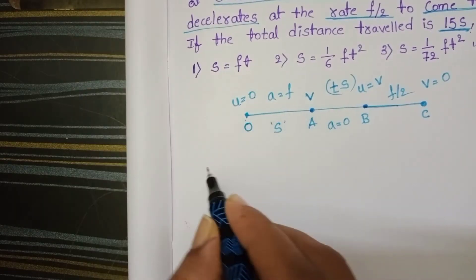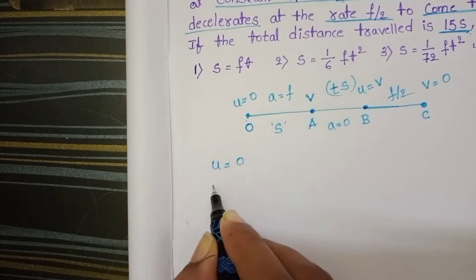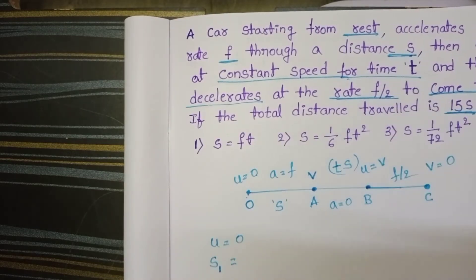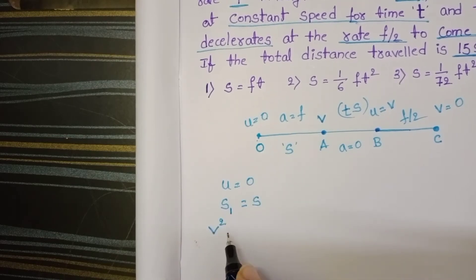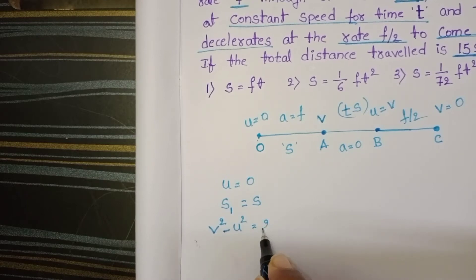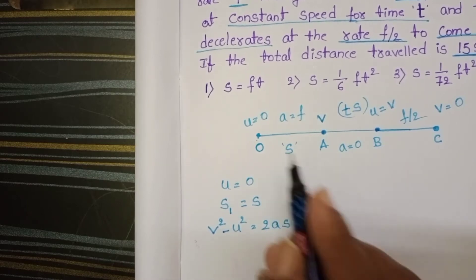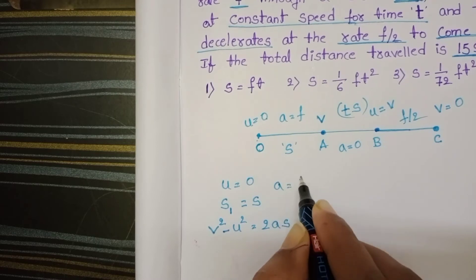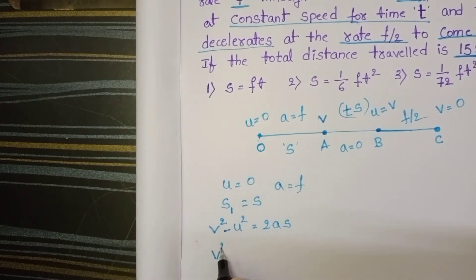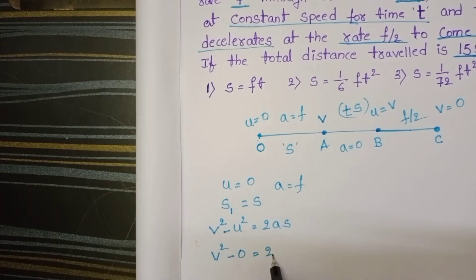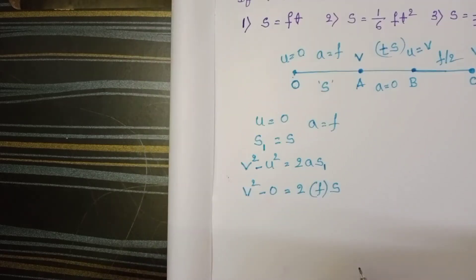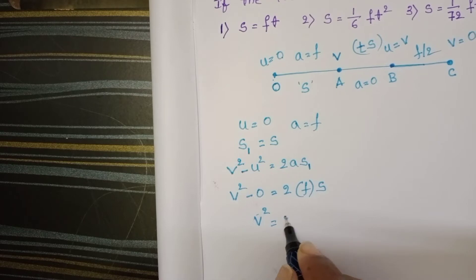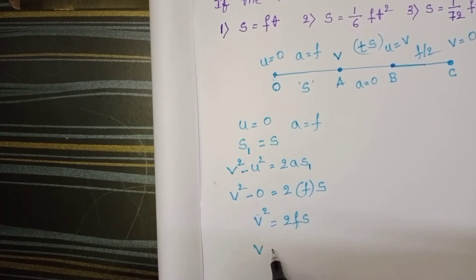From 0 to a, initial speed 0, distance s. So here s1 equals s. We know equation v² - u² = 2as. From 0 to a, acceleration equals f. So v² - 0 = 2 × f × s. Here s1 is s. So v² = 2fs and from this v = √(2fs).